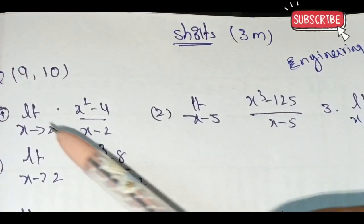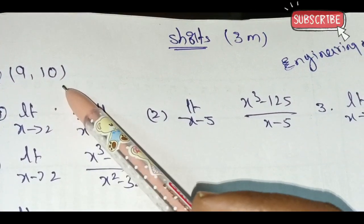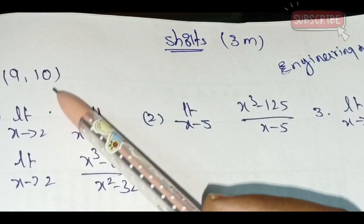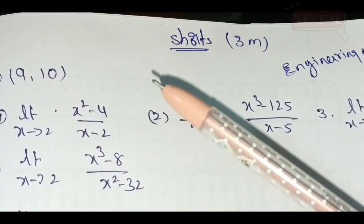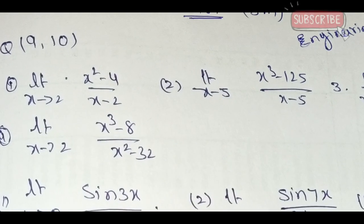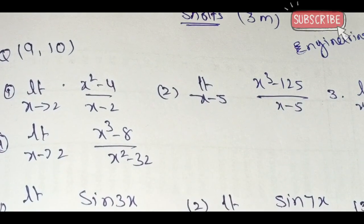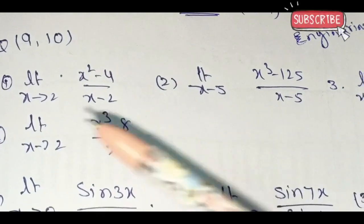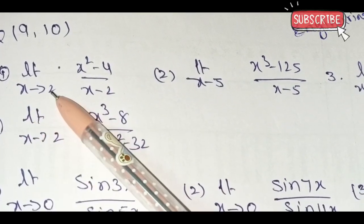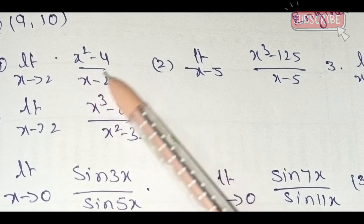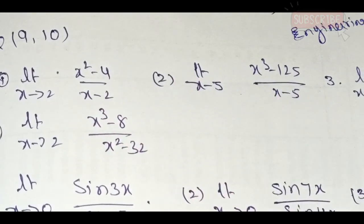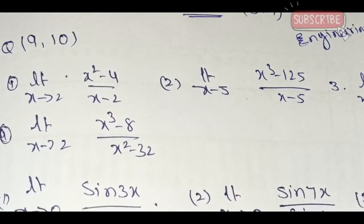Question number 9 and 10. In this case, the limits are the same. The limit as x tends to 2 of x squared minus 4 divided by x minus 2 — this is the model.